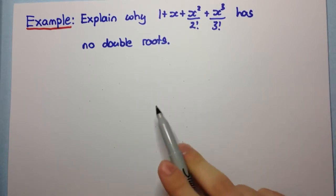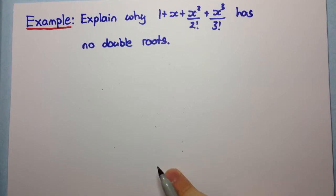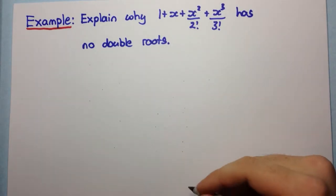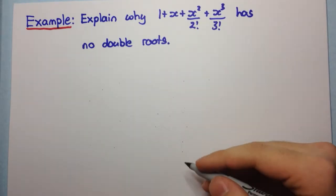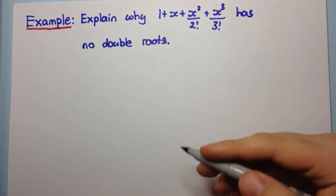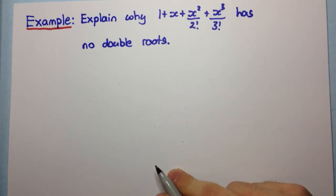The way we're going to do this is a method called a proof by contradiction. What a proof by contradiction is, is that we assume the opposite of what we're trying to prove, and then we work towards a false statement, and therefore we can conclude that our original assumption is false, which then proves what we have to prove.